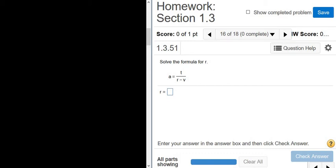Solve the formula for r. So we have little a equals t over r minus v, and we're looking for r. So r is on the bottom down here. The only way we're ever going to solve for it is if we get rid of this fraction.